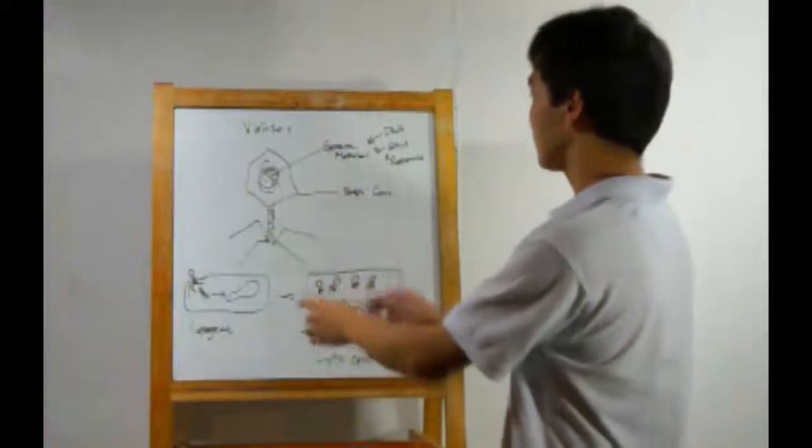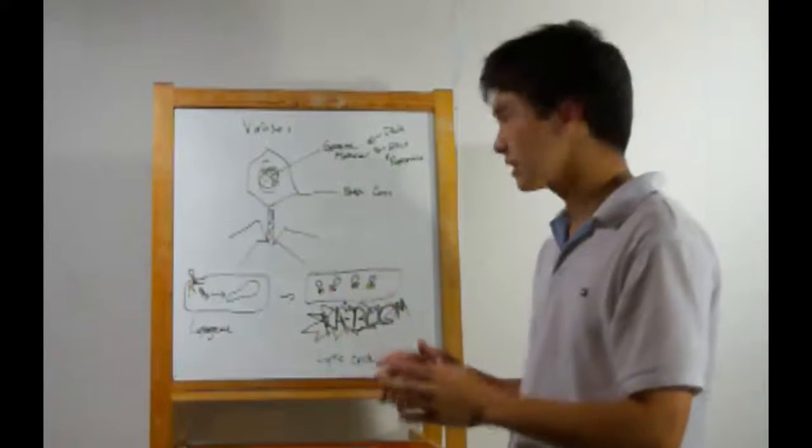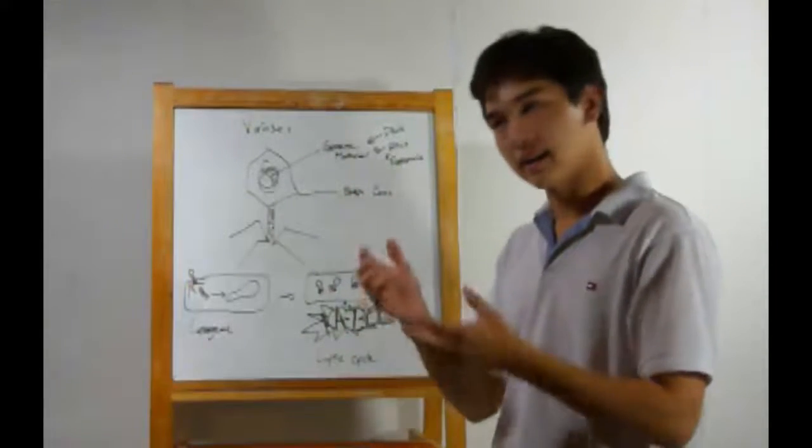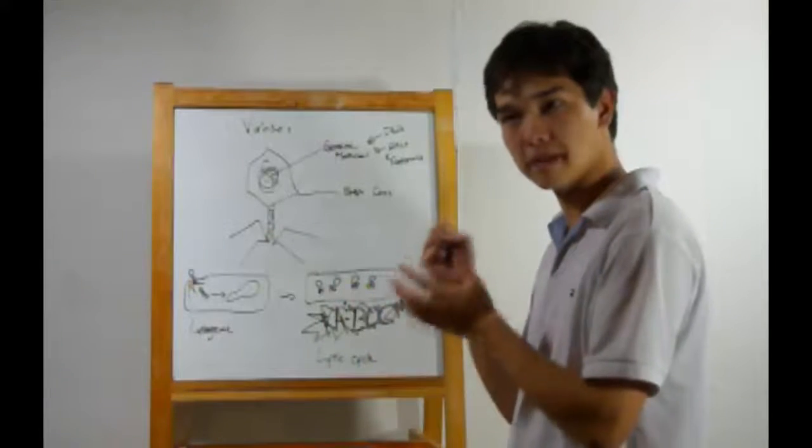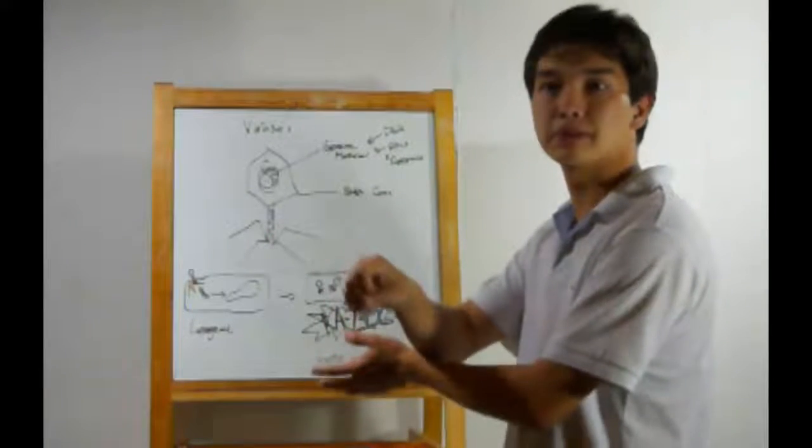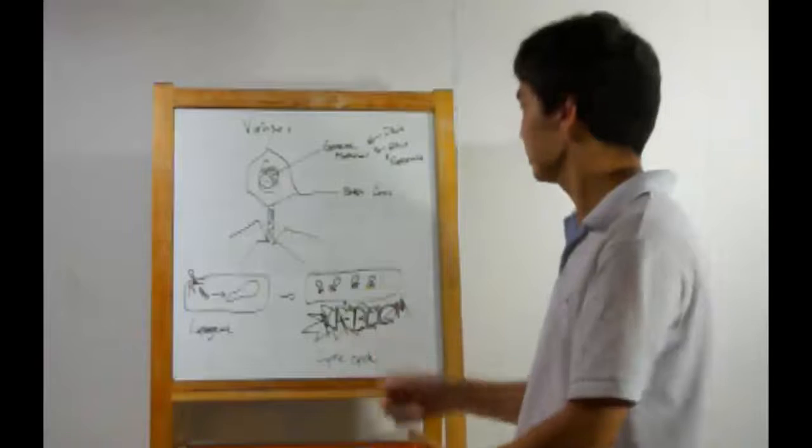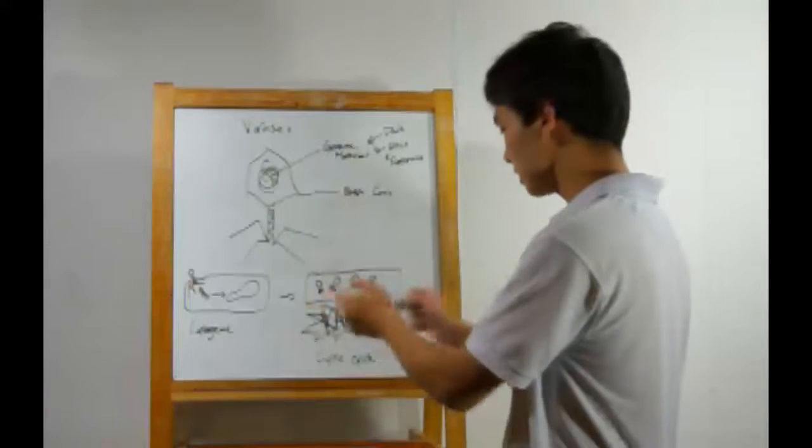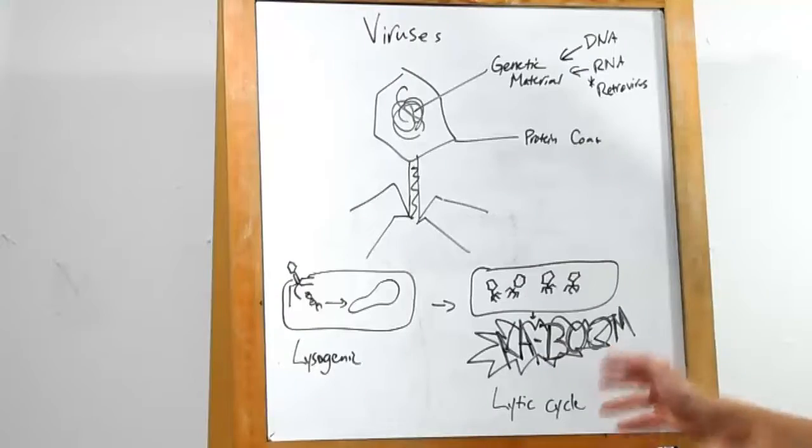Alright, now the virus will latch onto a cell. What cell it latches onto depends on the protein coat. If the protein coat does not match certain membrane proteins, the virus will just bounce off. However, if it does match, we can either enter the lysogenic cycle or the lytic cycle.